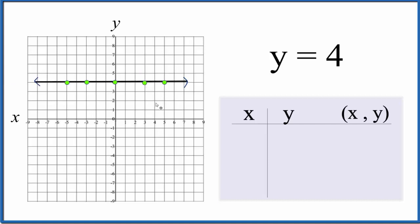If we had x equals 4, we just have a vertical line up and down along x, where every x value is 4.